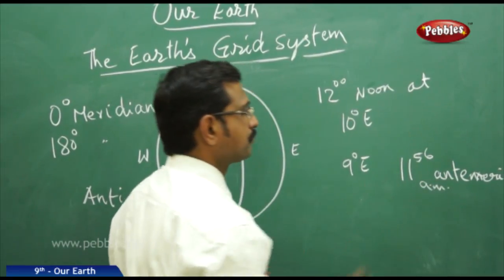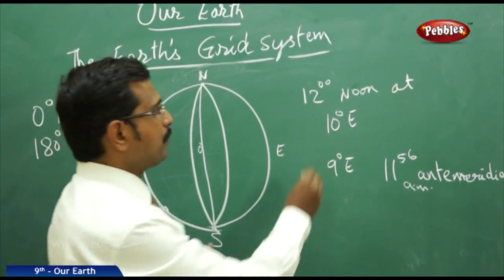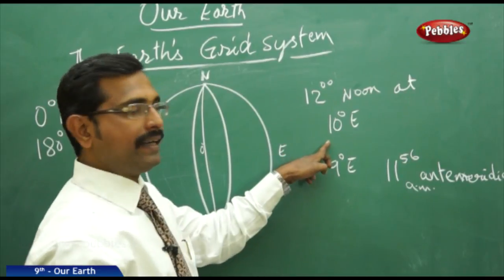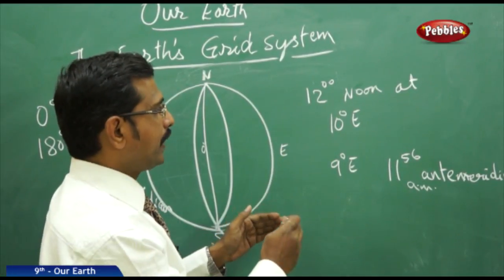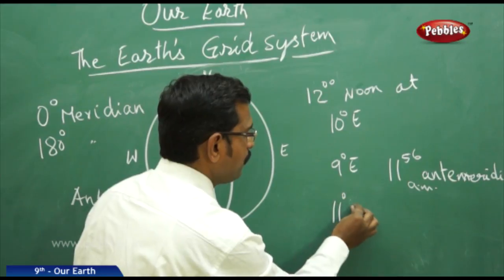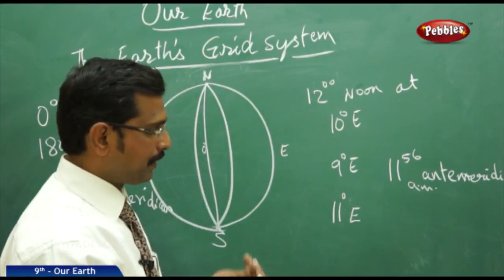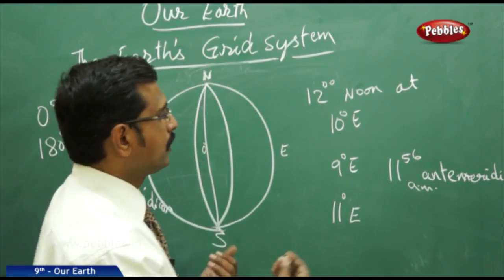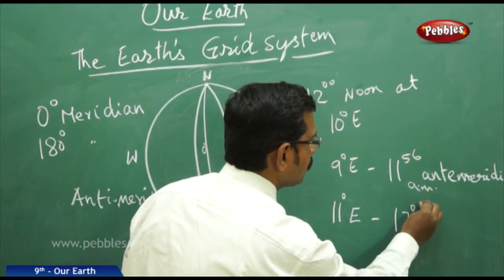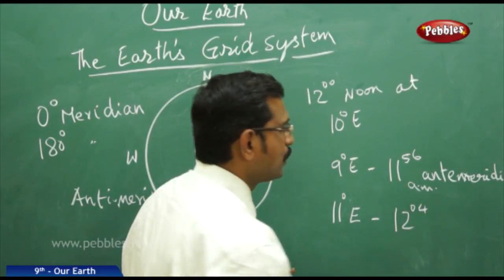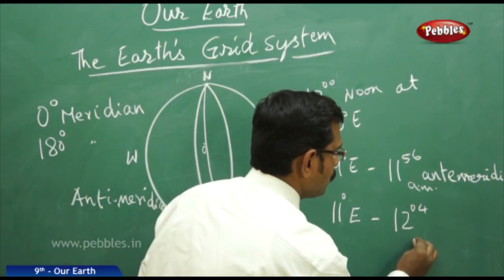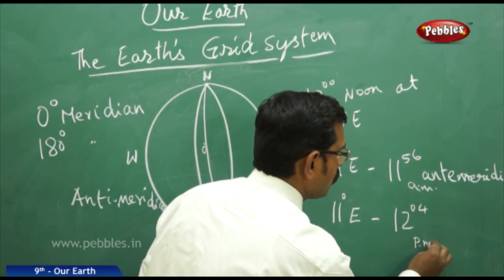At the same time, moving from 10 degrees east to 11 degrees east, we add 4 minutes, making the time 12 hours 4 minutes — this is post meridian, or PM.